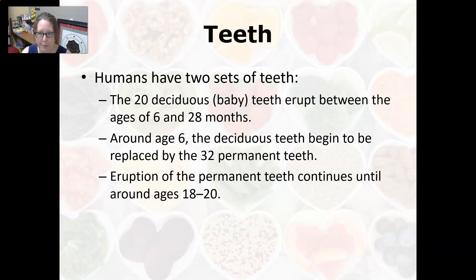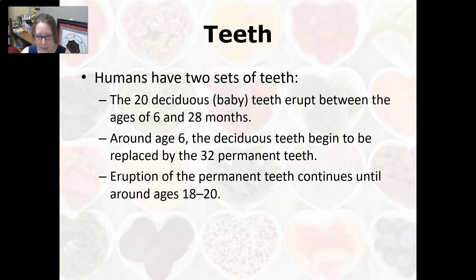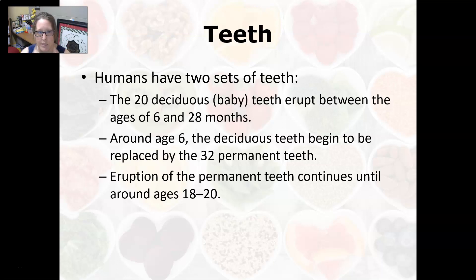Humans have two sets of teeth. The 20 deciduous, or baby teeth, erupt between the ages of six months and 28 months. Around age six, the deciduous teeth begin to be replaced by the 32 permanent adult teeth. Eruption of the permanent teeth continues until around ages 18 to 20, when the last molars — the wisdom teeth — come in.